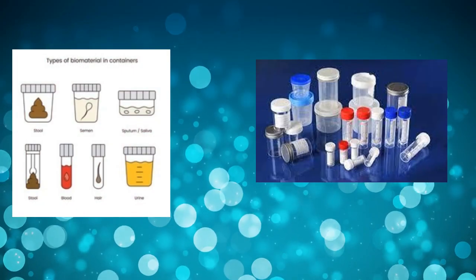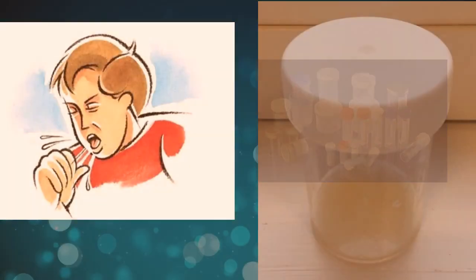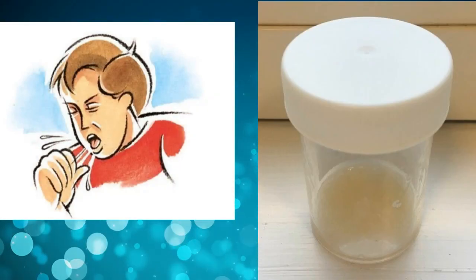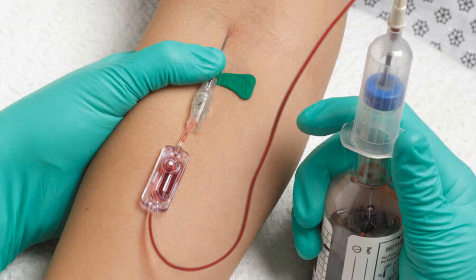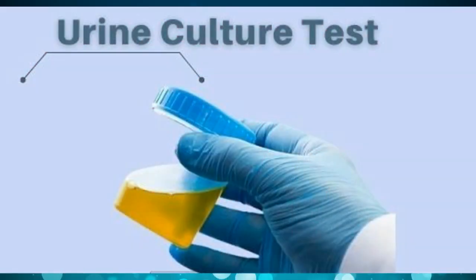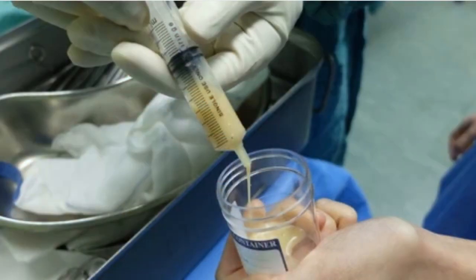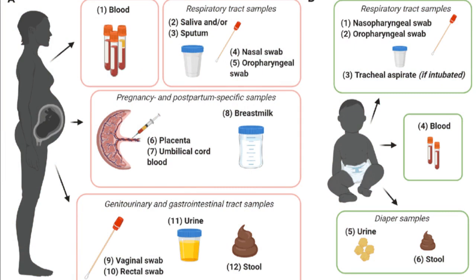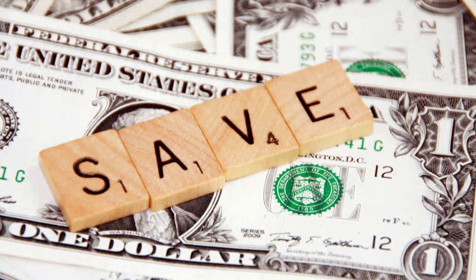The type of specimen that needs to be sent to the lab depends on the suspected pathogen. For example, we send sputum for a patient who is having cough, nasal and throat swabs for sore throat, blood culture for prolonged fever, urine for symptoms like burning micturation, pus from an abscess and so on. Good knowledge about the type of sample that needs to be collected for a particular pathogen reduces the burden on the lab and also saves money for the patient.